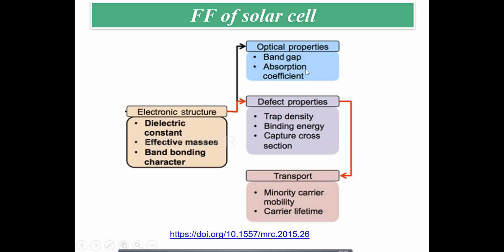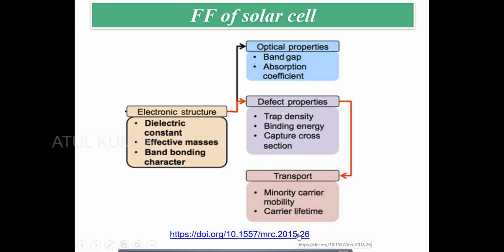Optical properties include band gap and absorption coefficient — highly important for a solar cell. Defect properties include trap density, binding energy, and capture cross section — these affect VOC generation. Optical properties affect current generation. Defect properties also control transport properties like carrier mobility and carrier lifetime, which again impact JSC values. This covers both the material aspect and device aspect.